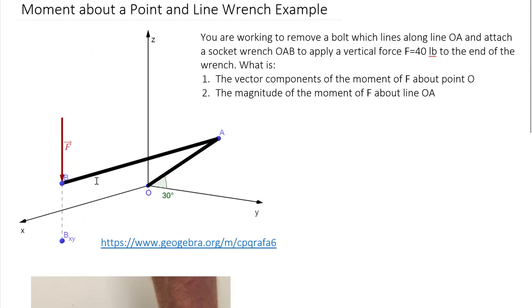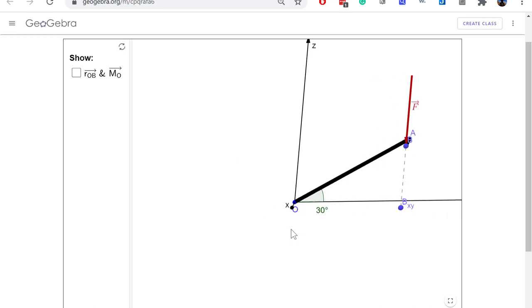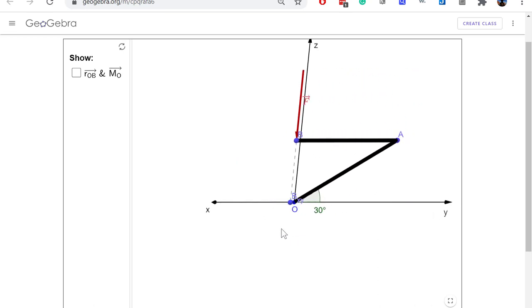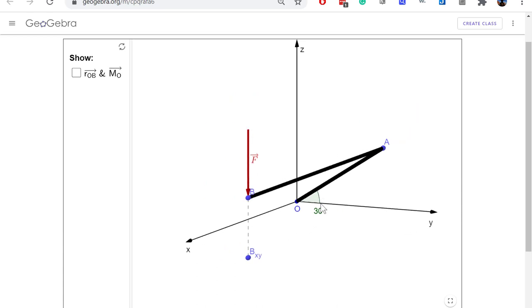Let's take a look at this interactive so you can see the spatial context of this system. Here is that wrench, here is our axis system, and we can look at it down from the end of the wrench. You can see that AB is parallel to the x-axis, here's that 30 degree angle.